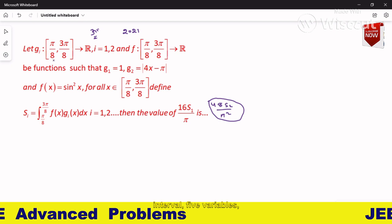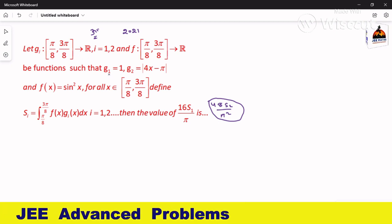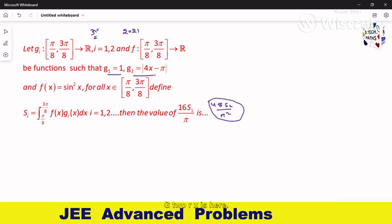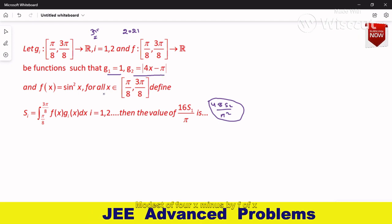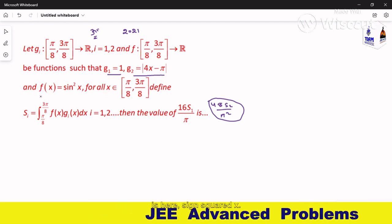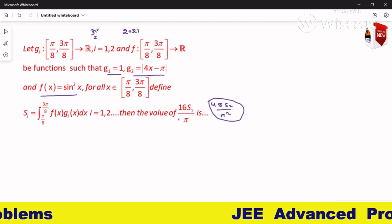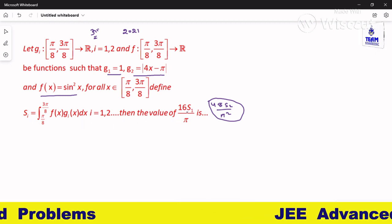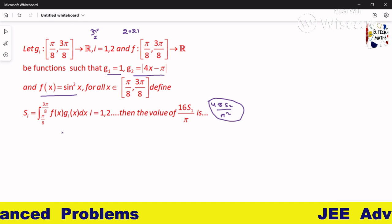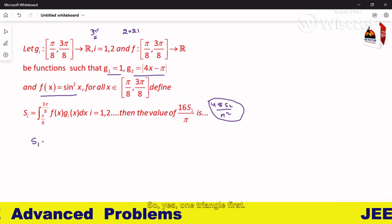Now f and g both are defined in the interval π/8 to 3π/8 to R. g1 of x is 1, g2 of x is modulus of 4x minus π, f of x is sine squared x. Now we have to find S_i defined as this, but we want 16 S1.